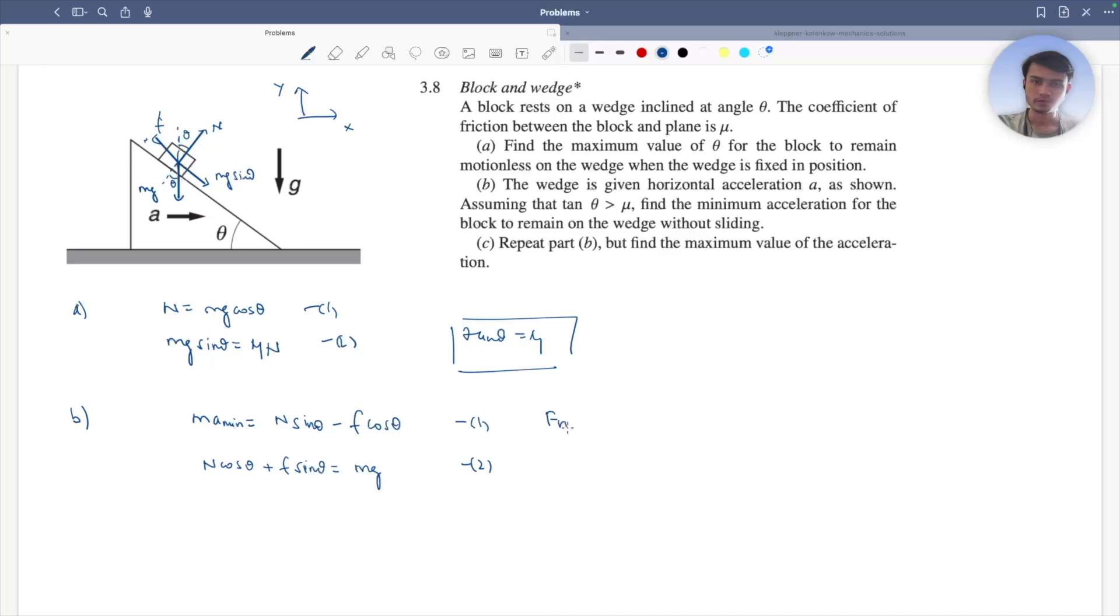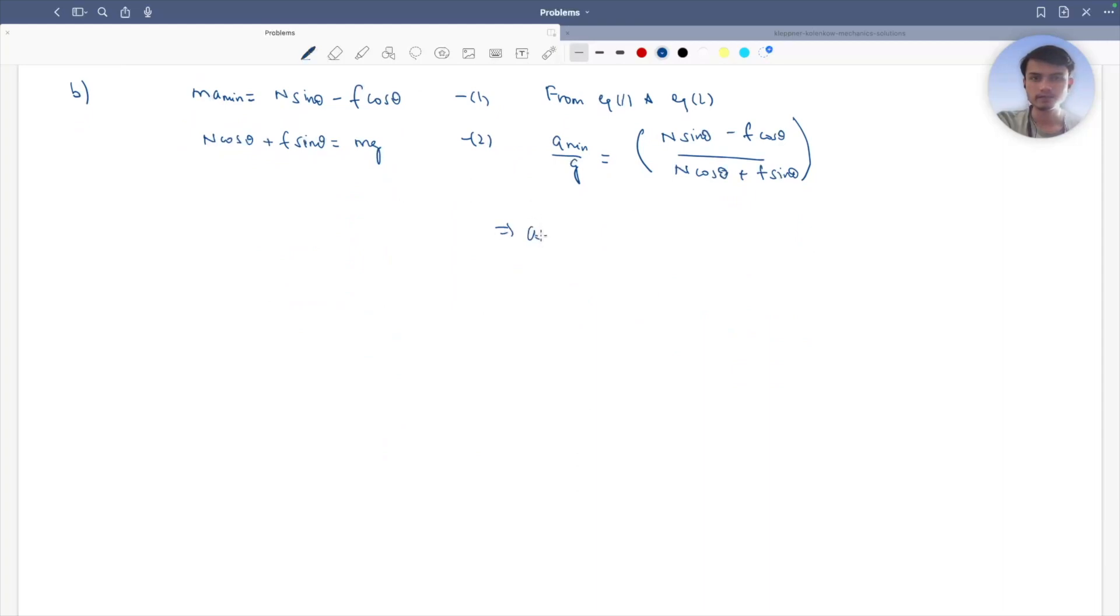So from equation 1 and equation 2, we have a minimum upon g equals to n sin theta minus f cos theta divided by n cos theta plus f sin theta. This implies that a minimum equals to g times n sin theta minus f cos theta divided by n cos theta plus f sin theta. Clearly till here I am done and now let's move to the c part.